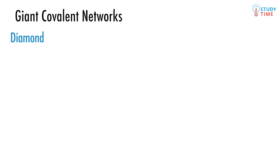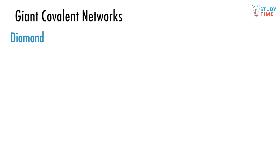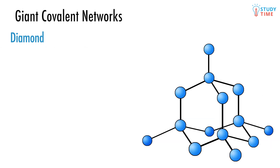Firstly, we'll talk briefly about diamond. You will have all heard thrilling tales about how only diamond can cut through other diamond because only diamond is strong enough. Well, that's because diamond is a giant covalent network. In diamond, carbon atoms are covalently bonded to four more carbon atoms. And that's all there is to it — the structure looks roughly like this.